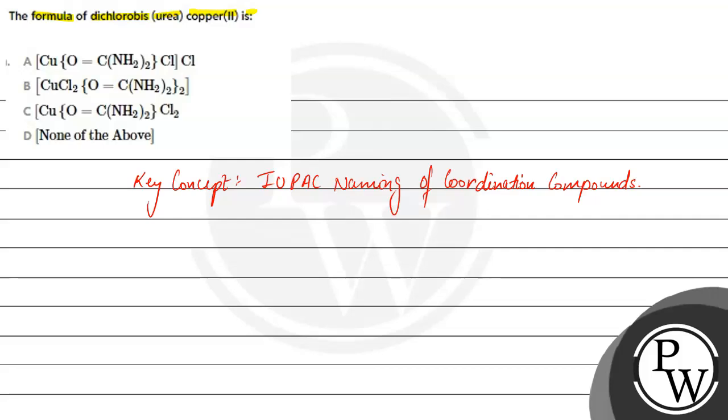What is the name given? It is dichlorobis(urea)copper(II). This is the formula given. Now, if we have the name given, we have to write the formula.